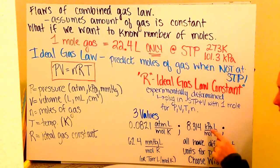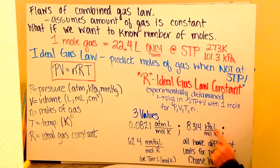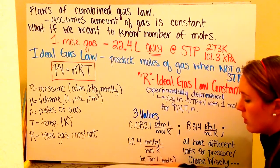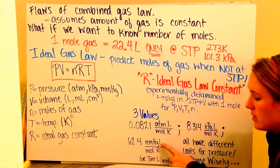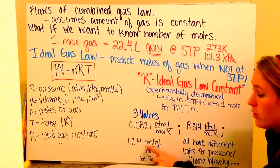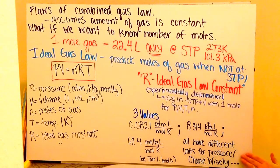If you use kilopascals, you should have got 8.31 kilopascal liters per mole Kelvin. And if you use millimeters of mercury or torr, you should have got 62.4 millimeters of mercury times liters divided by moles times Kelvin, or torr liters per mole Kelvin. Notice that all three units per pressure are different, and even four if you count in torr.